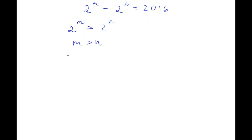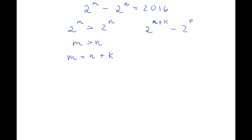So now I'm going to set m equal to n plus some constant k. If I plug in n plus k for m, I have 2 to the power of n plus k minus 2 to the power of n is equal to 2016.